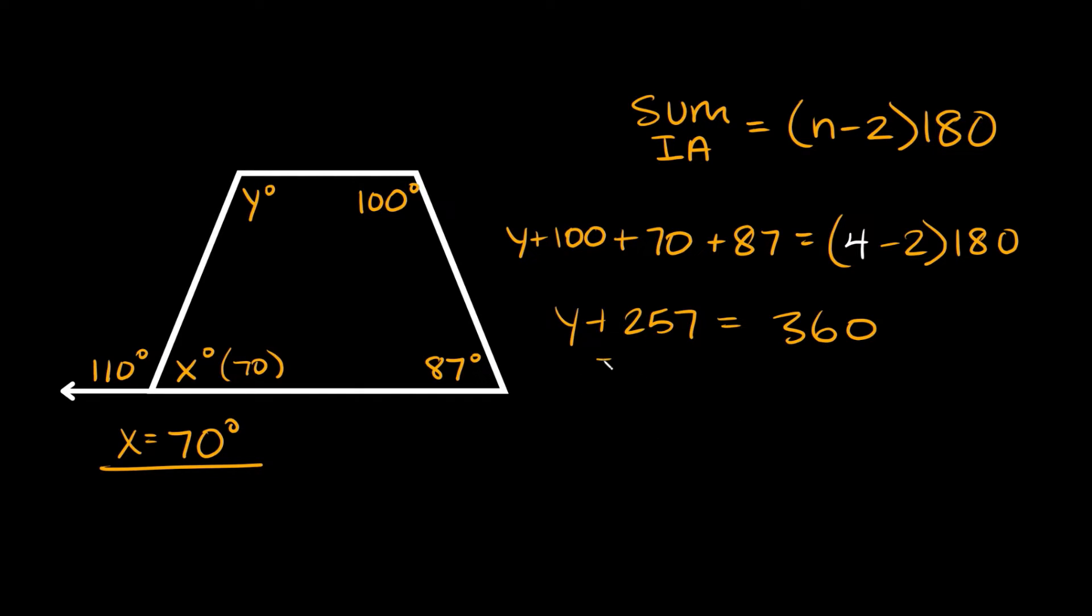So to solve for y here we'll subtract 257 from both sides. So then we get that y is equal to 103 degrees. So that's the angle for y.